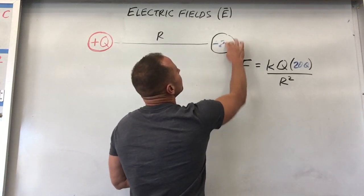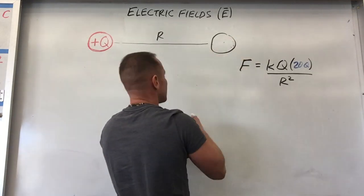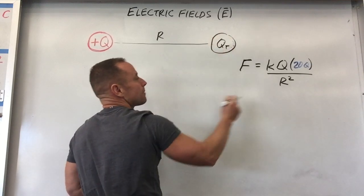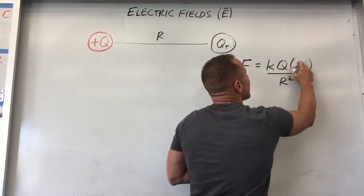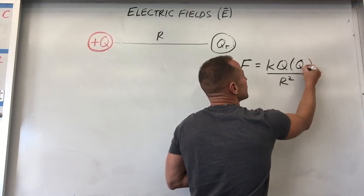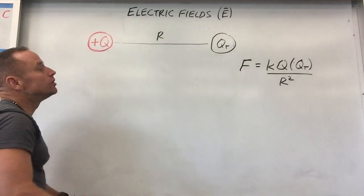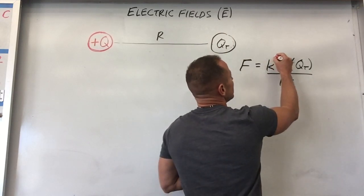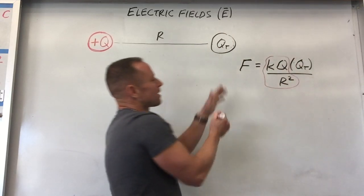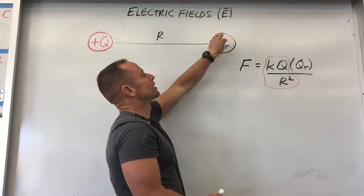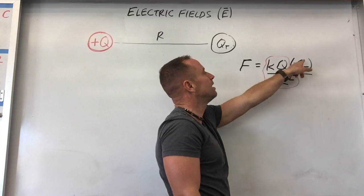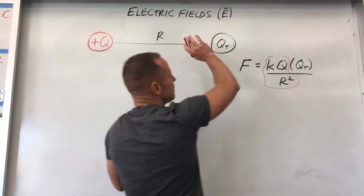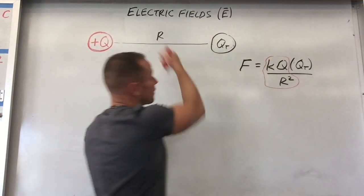No matter what charge I put here, I can call it qt — a test charge — to test what's happening at this point. Whatever that second charge is, I just place it there. The key insight is that what stays the same regardless of the second charge is just this part — it's kind of there all the time — and we get the force by multiplying that expression by whatever charge we put there. It's away if positive, toward if negative.